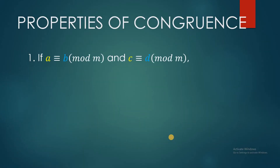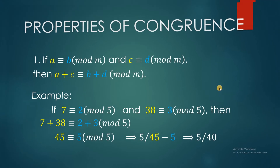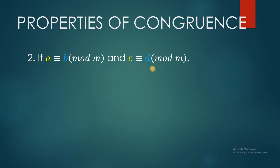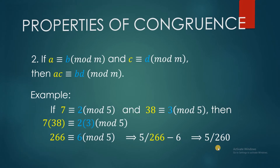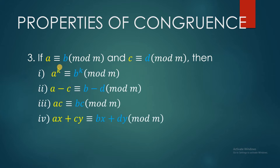Before the examples, let's look at the properties of congruence. The first property: if A is congruent to B mod M and C is congruent to D mod M, then the sum of A and C is congruent to the sum of B and D. For property number 2, if A is congruent to B mod M and C is congruent to D mod M, then we can take the product of A and C, which is now congruent to the product of B and D modulo M. The third property allows us to raise both A and B by a power k, take differences, multiply a constant C on A and B, and use a combination of properties 1 and 2.